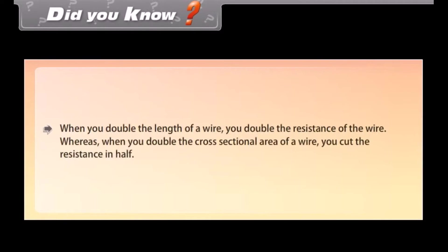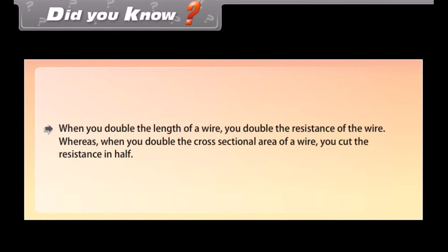Did you know? When you double the length of a wire, you double the resistance of the wire. Whereas when you double the cross-sectional area of a wire, you cut the resistance in half.